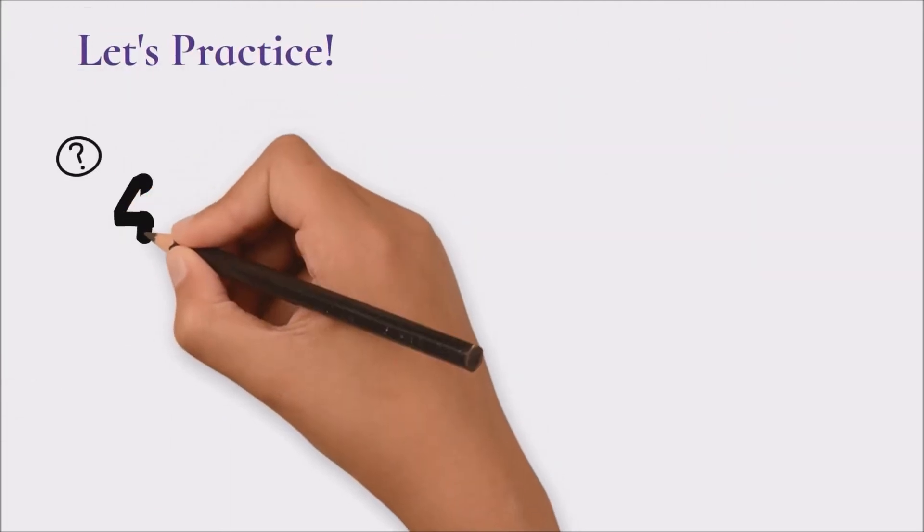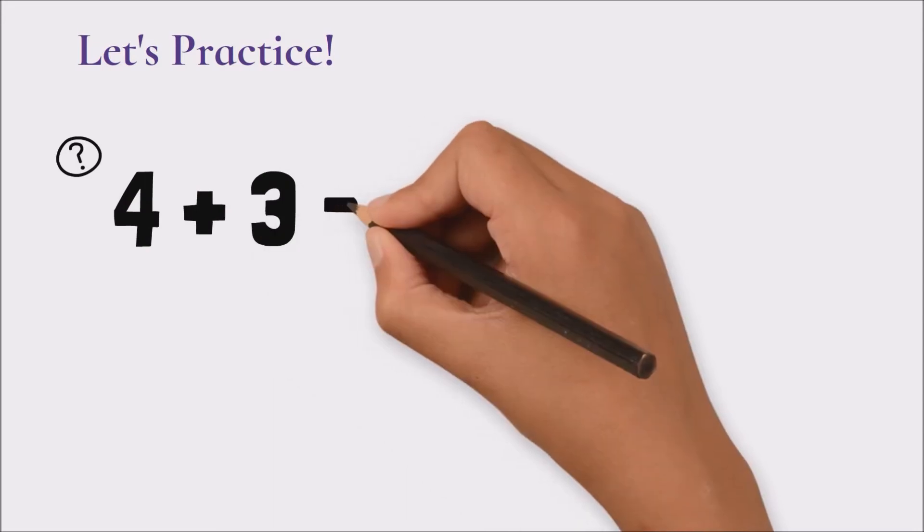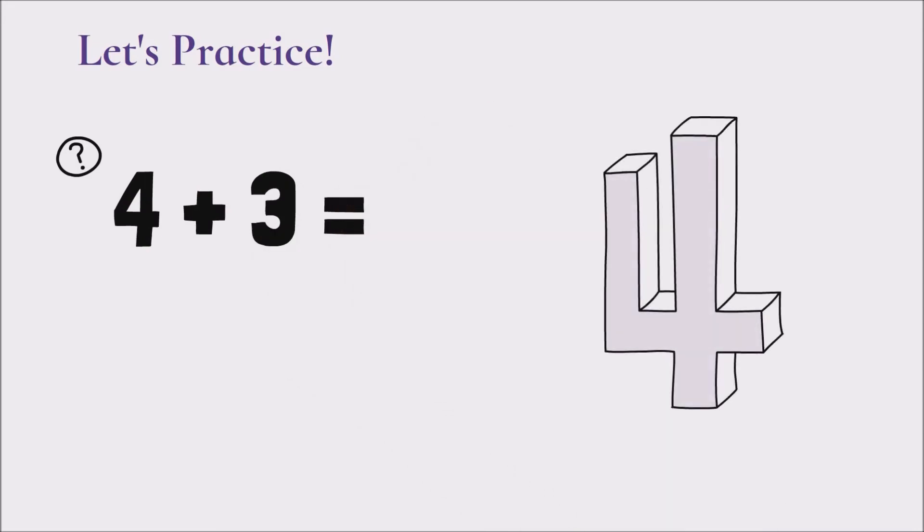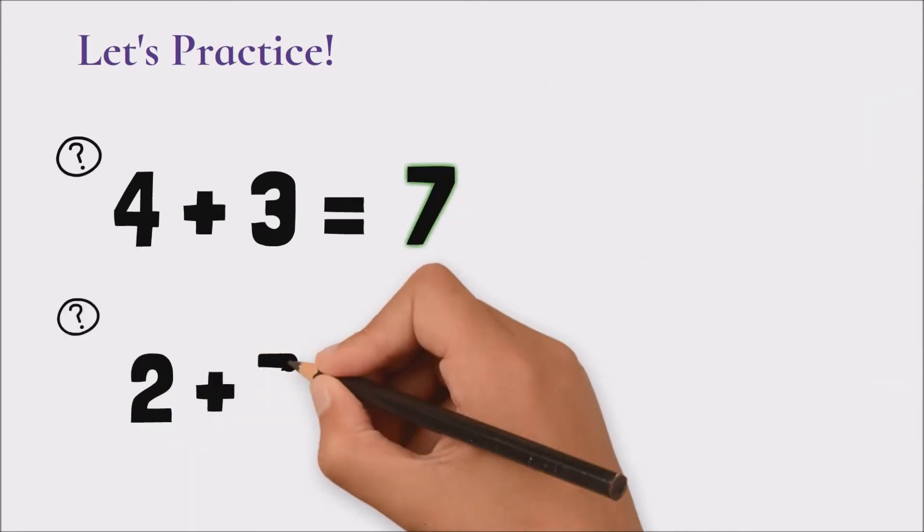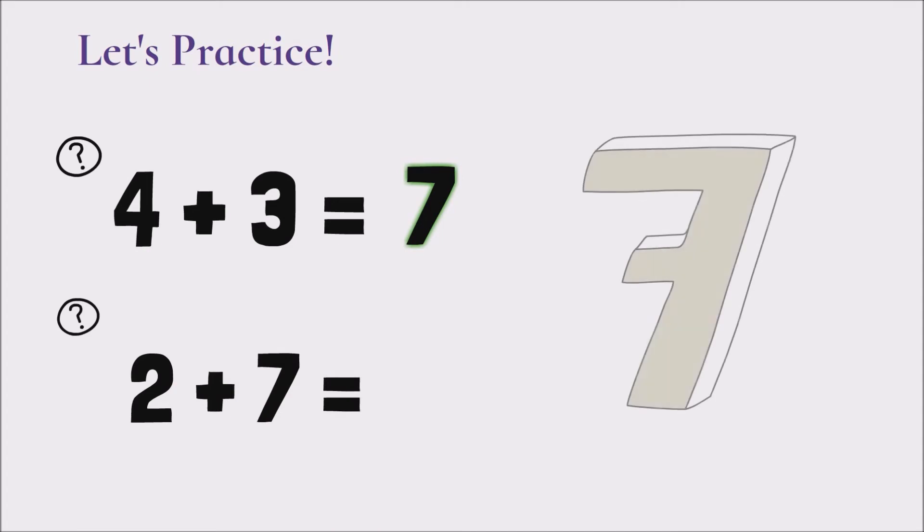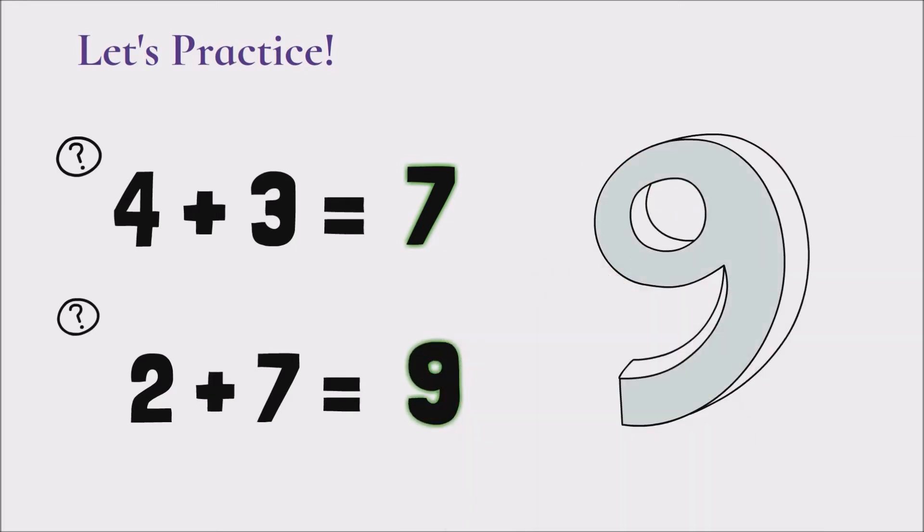Let's try two more examples. Number one: four plus three. We start at four and then we add three more steps as if we're counting towards ten. So from four it would be five, six, seven to get a sum of seven. Number two: two plus seven. We start with the bigger number, so we start at seven and count towards ten by two steps. So from seven it would be eight, nine to get a total of nine.